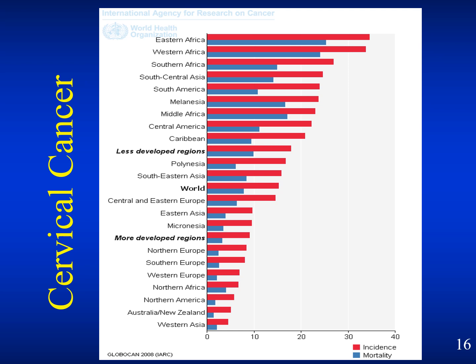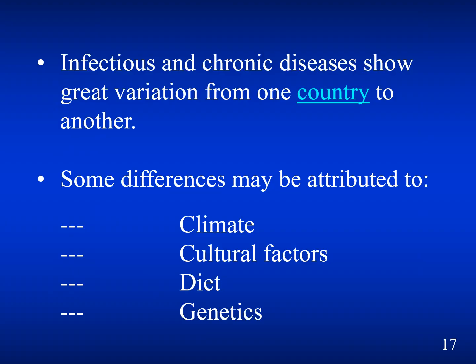For example, with cervical cancer, if you look at different countries' incidence and mortality data, you could write down a number of observations and then test a hypothesis. Infectious and chronic diseases show great variation from one country to another. The coronavirus — how it behaves in different countries, and what demographics it affects — is an interesting area to examine. Some differences may be attributed to factors such as climate, cultural factors, diet, and genetics.